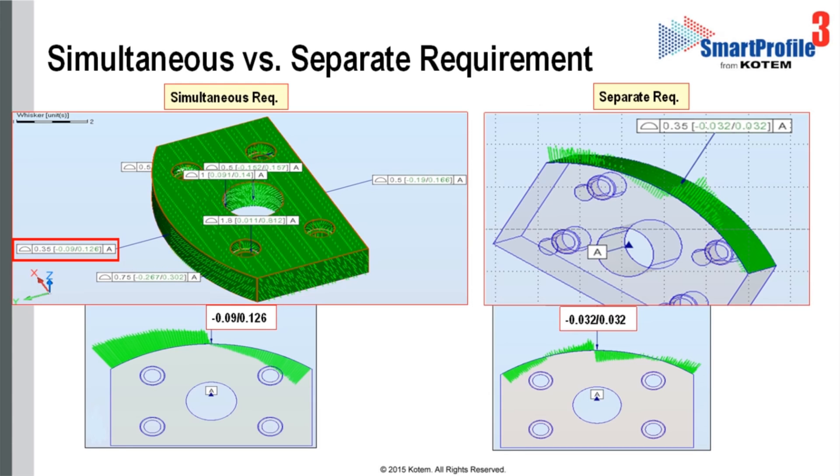Let's look at one final example to illustrate the difference between simultaneous and separate requirements. Here we see a part with profile tolerances applied to several features. Again, the deviations of the 0.35 profile to A are larger when evaluated simultaneously than when evaluated separately.